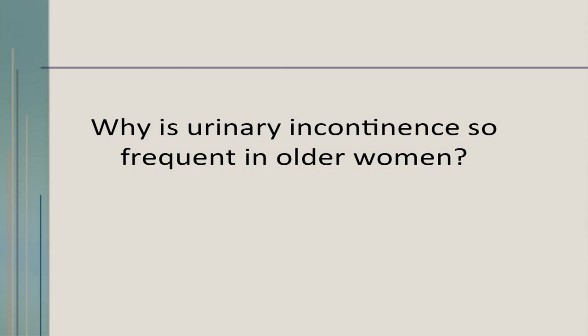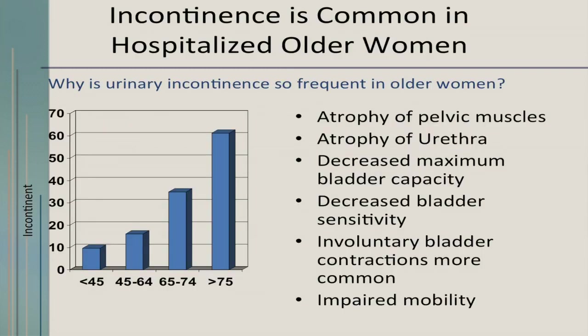Urinary incontinence is very common in older women, particularly starting at age 40, and is even worse when hospitalized. By age 75, there's over a 60% risk of developing incontinence, particularly in the hospital. The pelvic muscles atrophy, the urethra atrophies, there's decreased bladder capacity, insensitivity, and impaired mobility. You're more likely to have incontinence, which is very embarrassing and distressing, but can also contribute to skin breakdown and pressure sores.